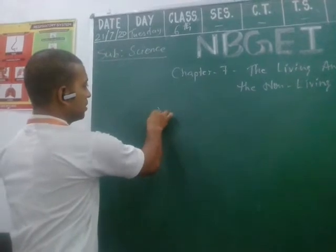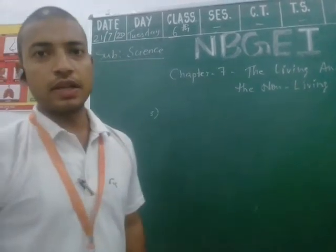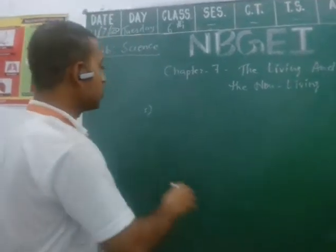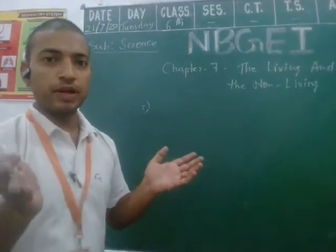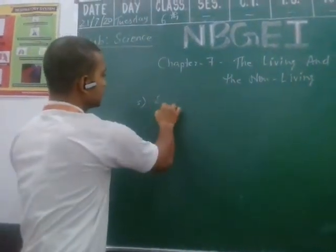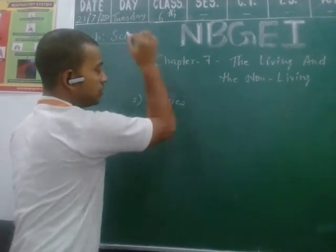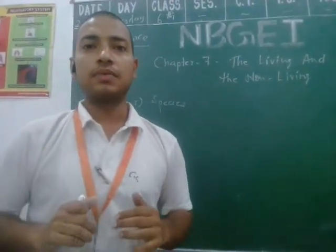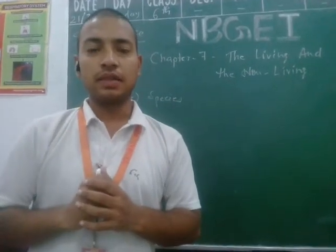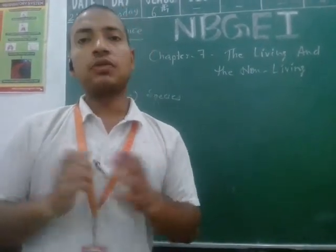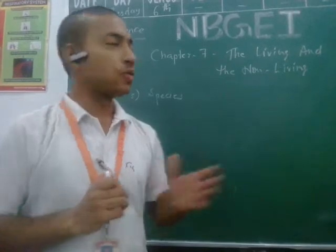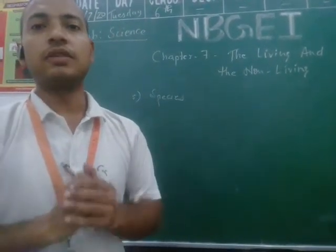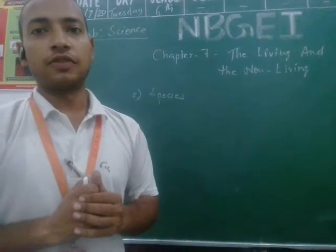Starting in today's class, the 5th point of glossary: species. What is species? A group of similar living organisms that can produce itself — those are known as species. Their characteristics are little bit similar to the previous individuals.